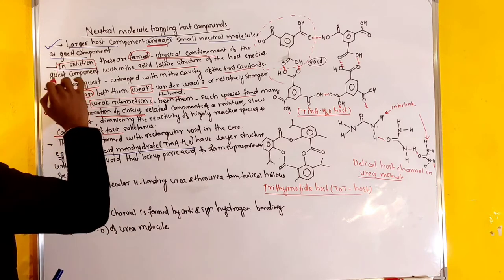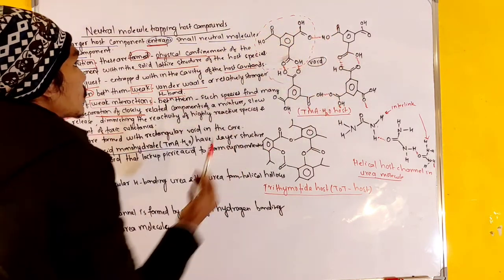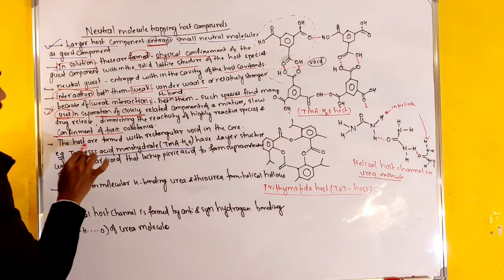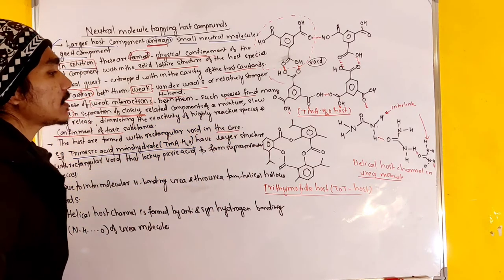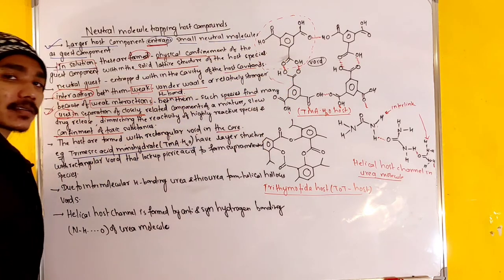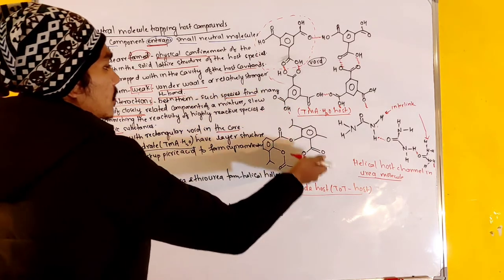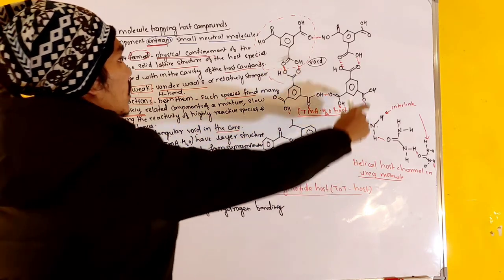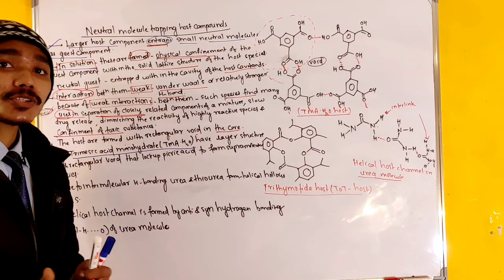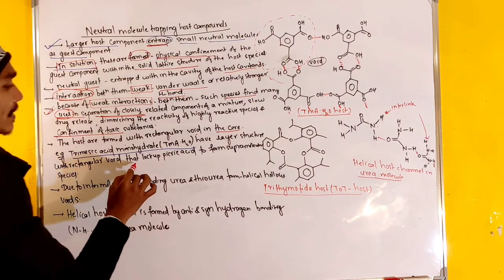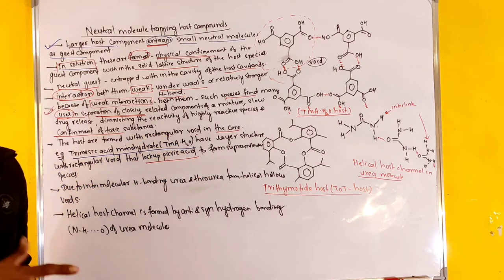Trimesic acid monohydrate has layer structure. It has this type of structure, layer structure. This reacts with picric acid to form the supramolecular species. Picric acid forms the supramolecular species.